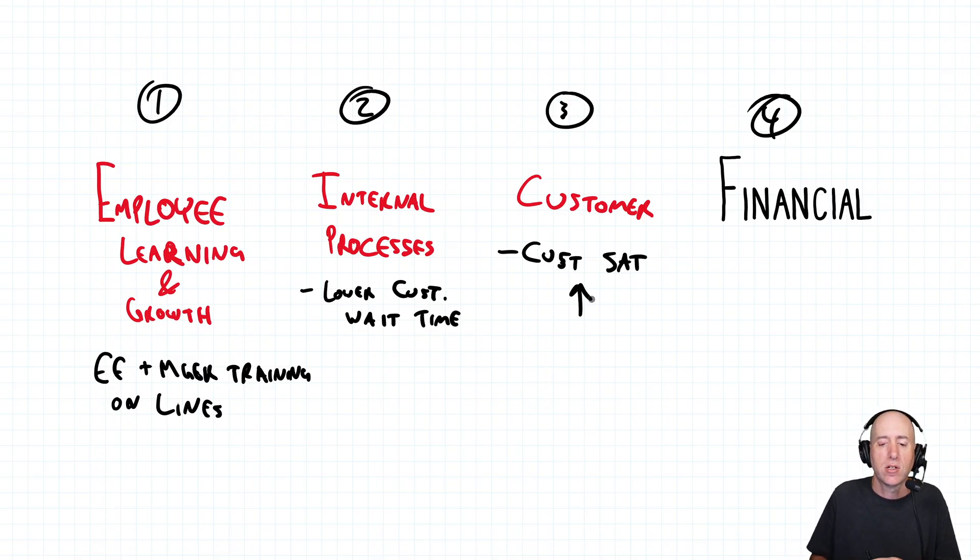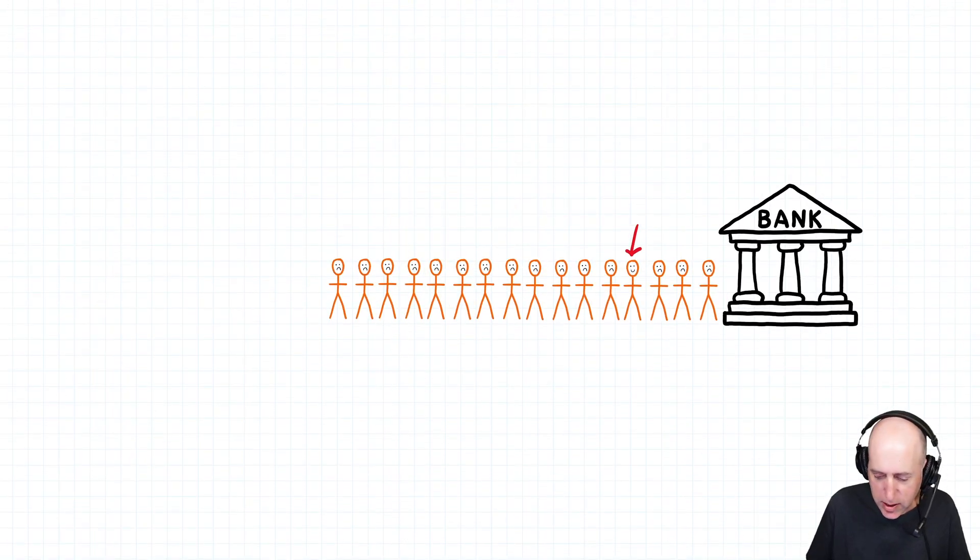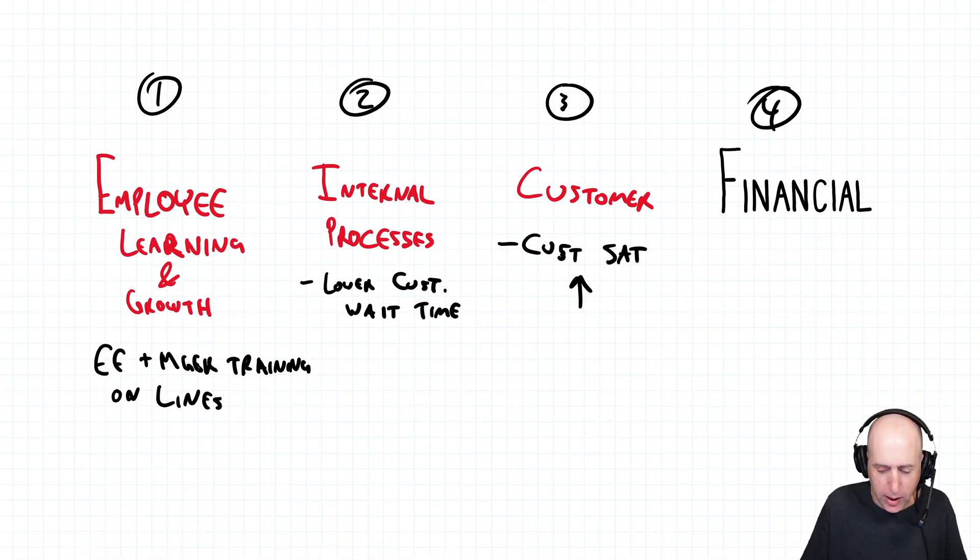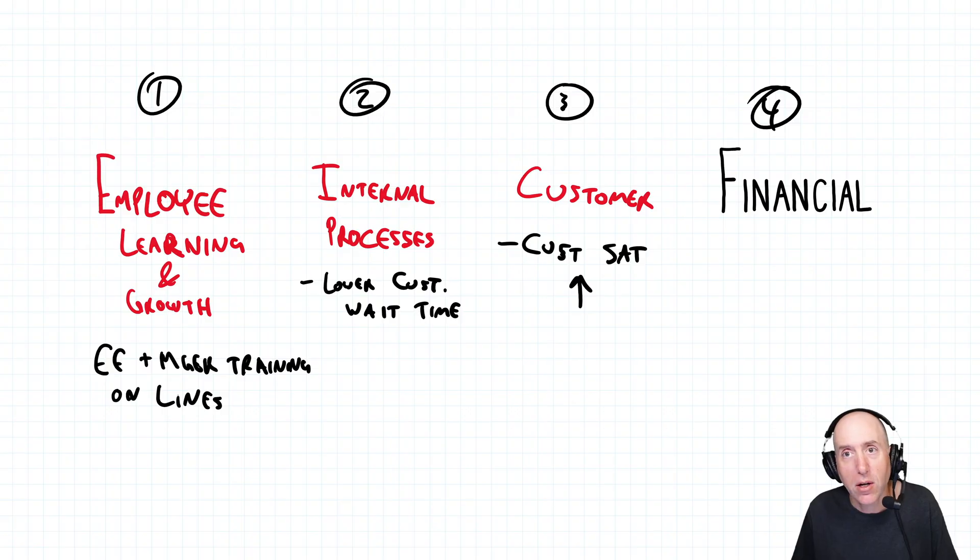So maybe a customer satisfaction happiness score goes from a two out of five to a four out of five, something like this. And again, you're going to measure it and you're going to have some responsibility over that. So our employees are better trained. Our customers aren't waiting in these long, tedious lines as much. Customers seem happier with our bank.